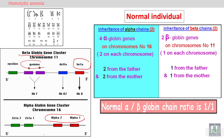The globin genes are located on chromosome 11 and chromosome 16. Chromosome 16 contains the alpha globin genes — we have four alpha globin genes in total, two from the mother and two from the father, since each chromosome 16 carries two alpha genes. For beta globin, we have two beta genes — one from the father and one from the mother — located on chromosome 11, one on each chromosome.